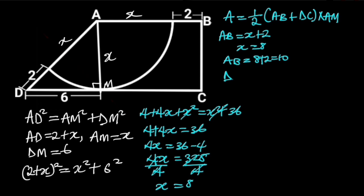DC is equal to DM plus MC. But DM is equal to 6, and MC is equal to AB, which is equal to 10. It follows that DC is equal to 6 plus 10, which is equal to 16.